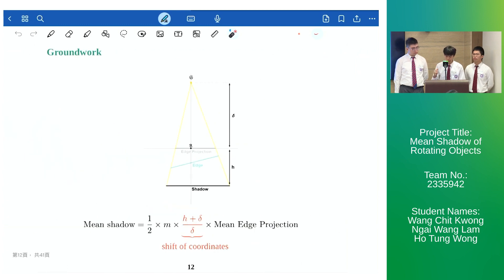Lastly by introducing the coordinate system we set the rotation center as the origin and consider the edge projection on the x-axis instead of on the ground. By doing so we can further simplify future calculations. And now all that remains for us is to determine the mean projection of a single edge.